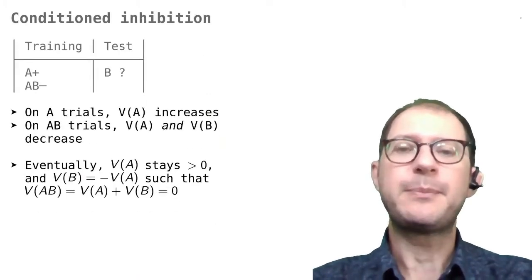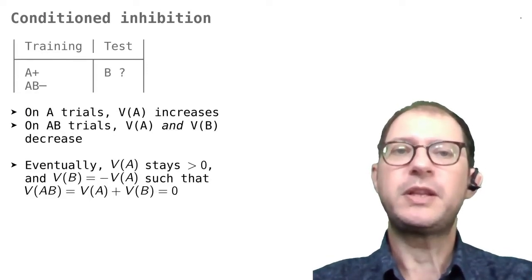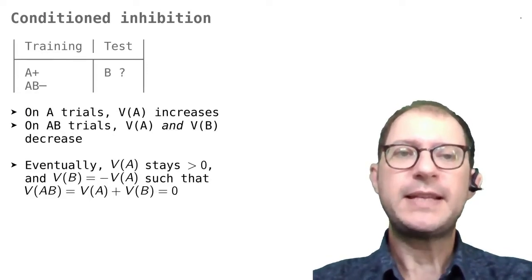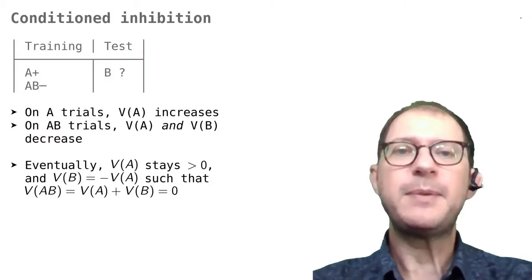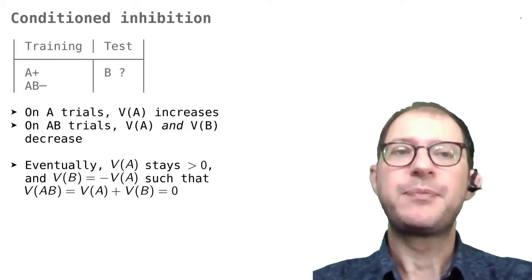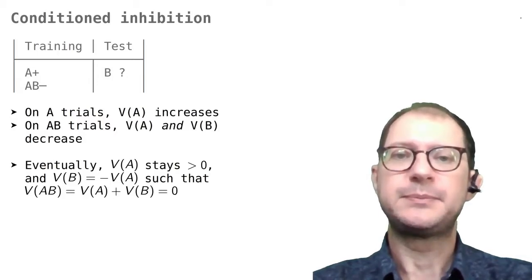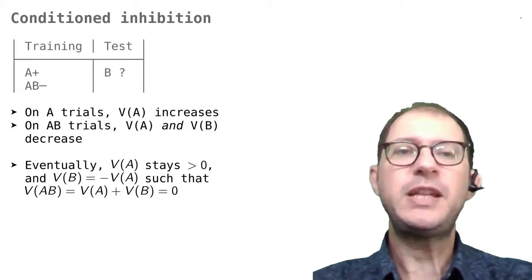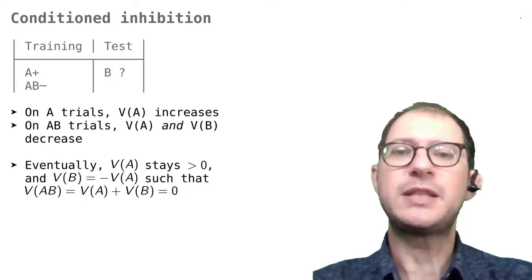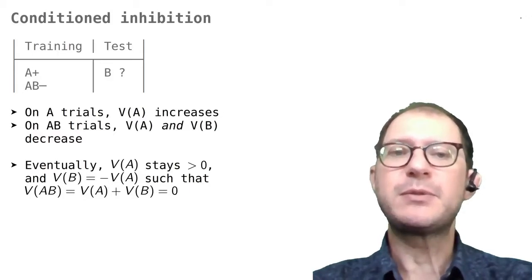Let's move on to the final example in this lesson, which is conditioned inhibition. We saw in our lesson on conditioned inhibition that an animal can learn that a stimulus is correlated with something not happening, rather than with something happening. As a result, that stimulus will inhibit responding, rather than excite it. RW explains conditioned inhibition in terms of negative associative strength. Let's see how this works.